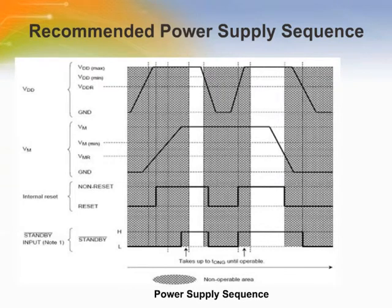If the VDD drops to the level of the VDDR or below while the specified voltage is inputted to the VM pin, the IC is internally reset as a protective measure against malfunctioning. Likewise, if the VM drops to the level of the VMR or below while the regulation voltage is inputted to the VDD, the IC is internally reset as a protective measure against malfunctioning.